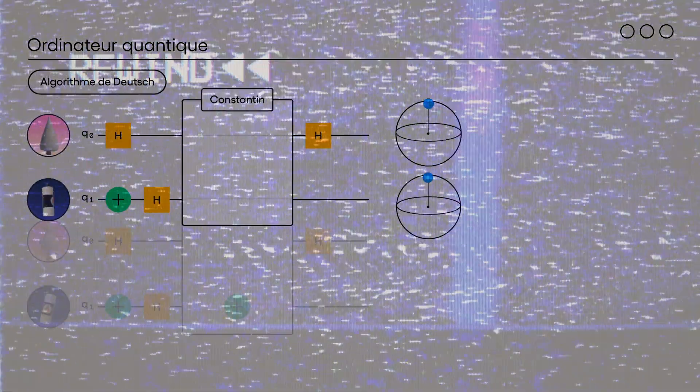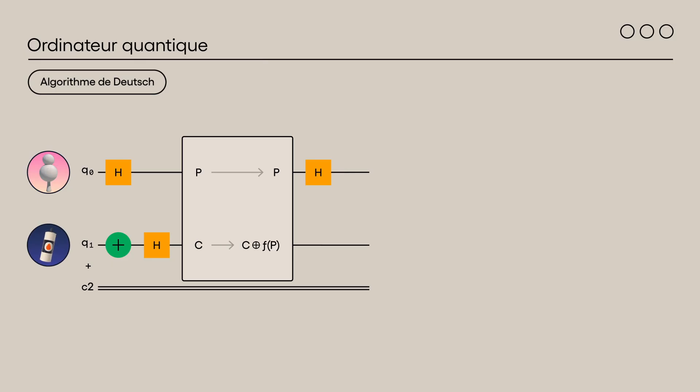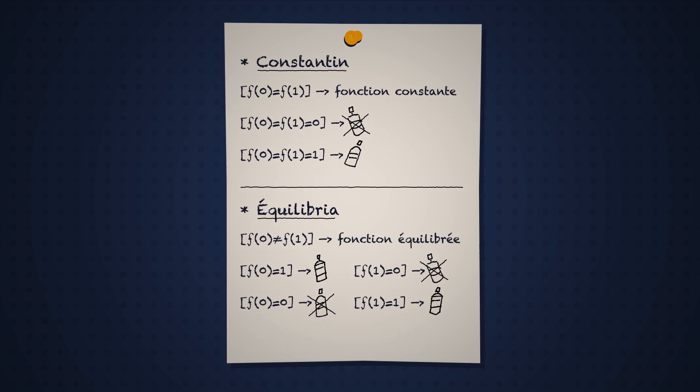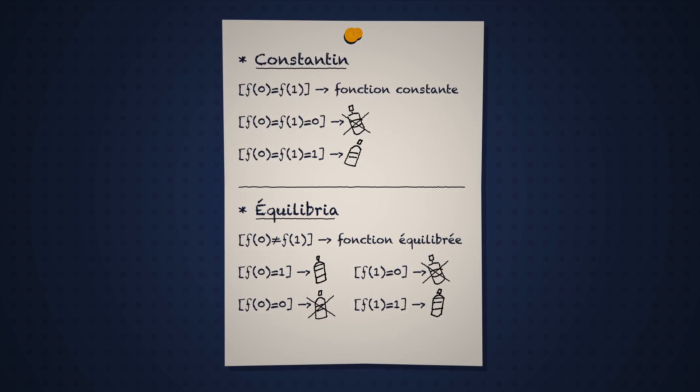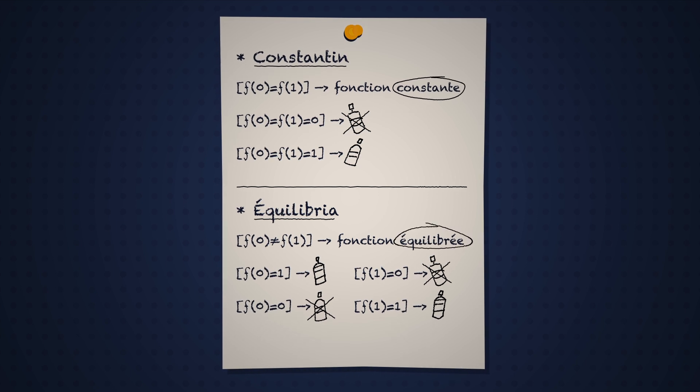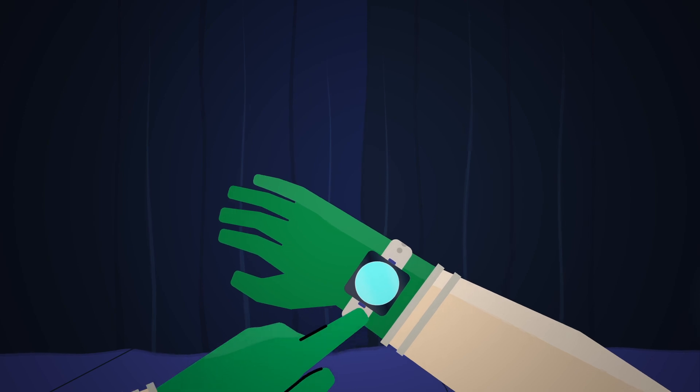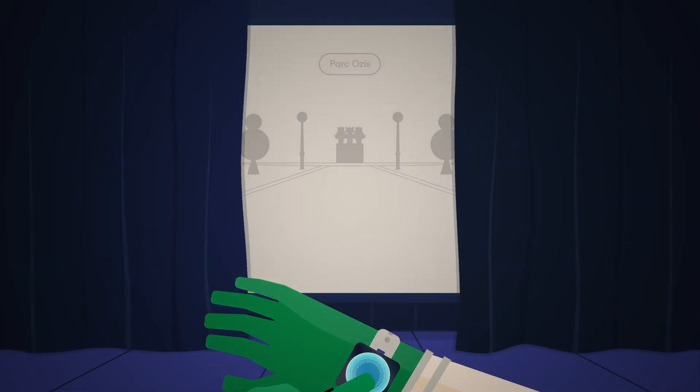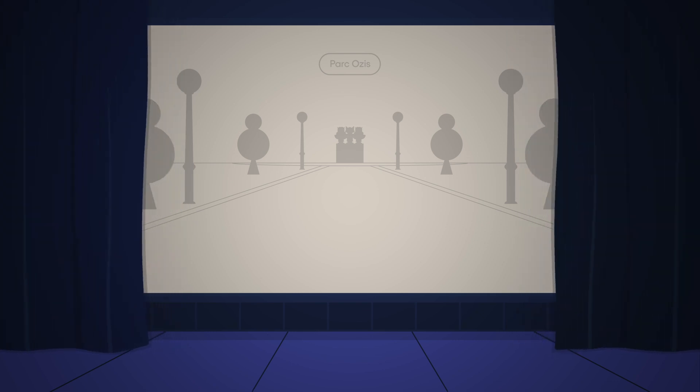Fait intéressant, regardez la couleur de la statue, soit mesurer Q1, ne vous apprend rien sur l'identité de la personne fautive. L'algorithme de Deutsch présente un avantage quantique. Vous êtes arrivé à déterminer si la fonction f de P est constante ou équilibrée en ne l'évaluant qu'une seule fois. Autrement dit, dans un monde quantique, vous pouvez déterminer quel vandale a sévi en observant qu'un seul parc, alors que vous auriez patrouillé les deux dans un monde classique.